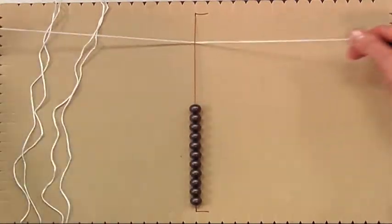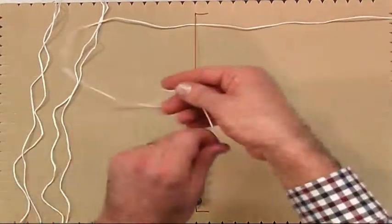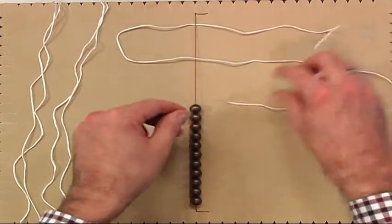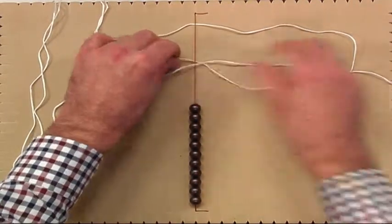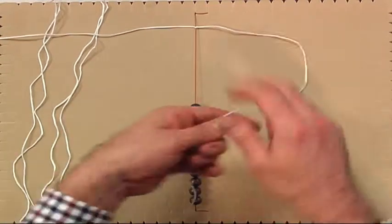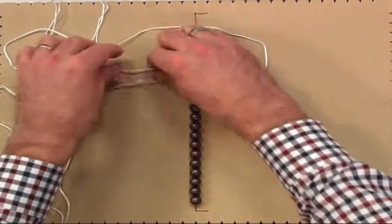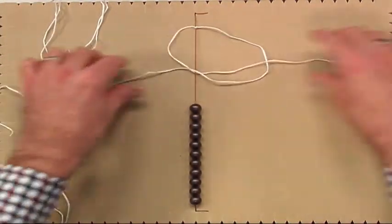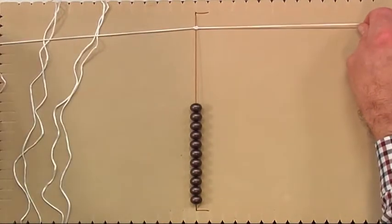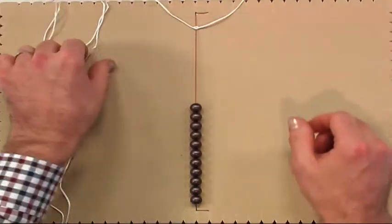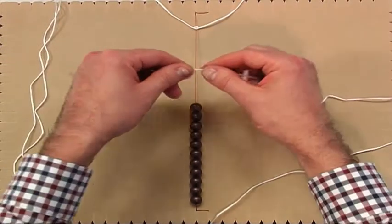We take one of our strands, we thread it underneath the lazy and we do a single square knot. So we do the left hand side first, and then we do the right, like so. And then we just place that out of the way.